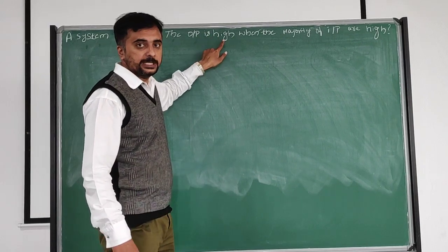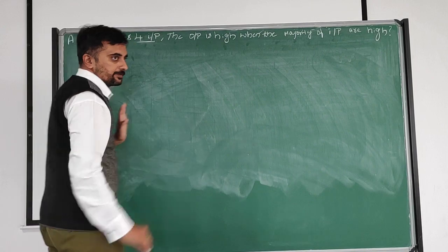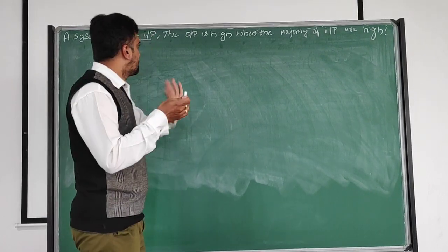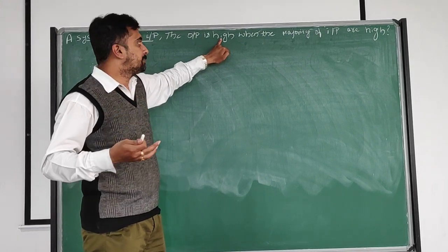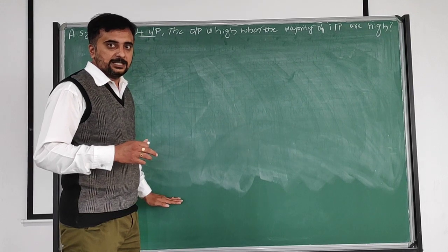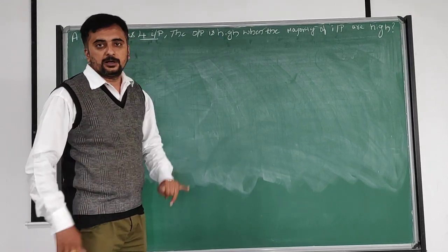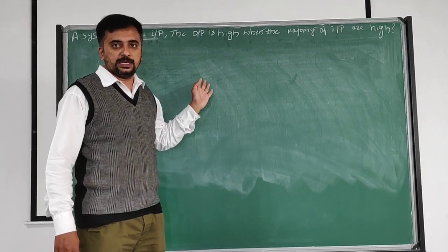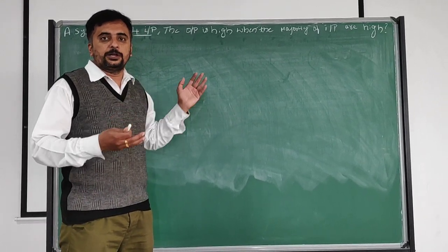The output is high when the majority of the inputs are high. Four inputs means A, B, C, D. High indicates one - we have to write the output as one when the majority of inputs are high, meaning total number of ones should be more. This is a very important question for examination; it has been repeated in the previous two to three years.